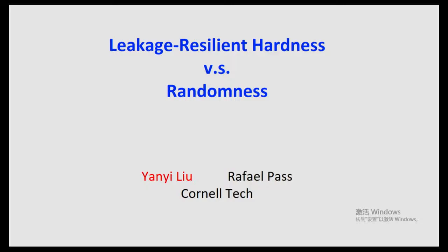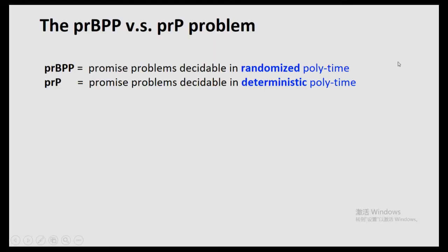I'm very excited today to talk about my recent work. It's actually a work in progress on leakage-resilient hardness versus randomness, and this is joint work with Professor Rafael Pass at Cornell Tech. So today we're going to focus on the so-called BPP versus P problem. I think we talked about it all the time yesterday, but let us anyway give some recaps on the notions of BPP and P.